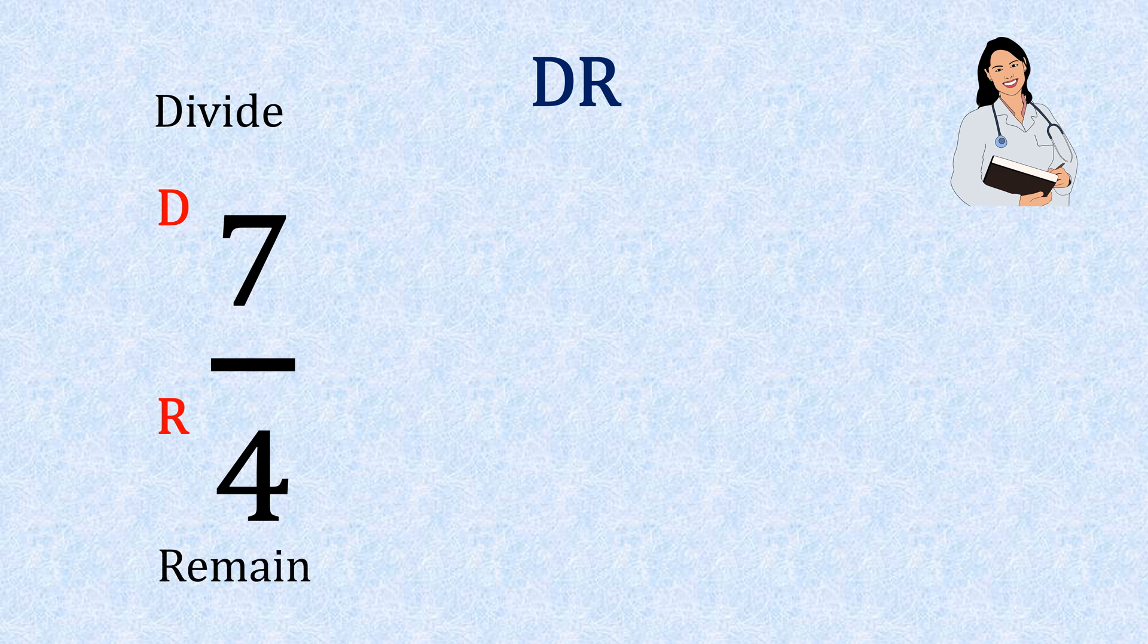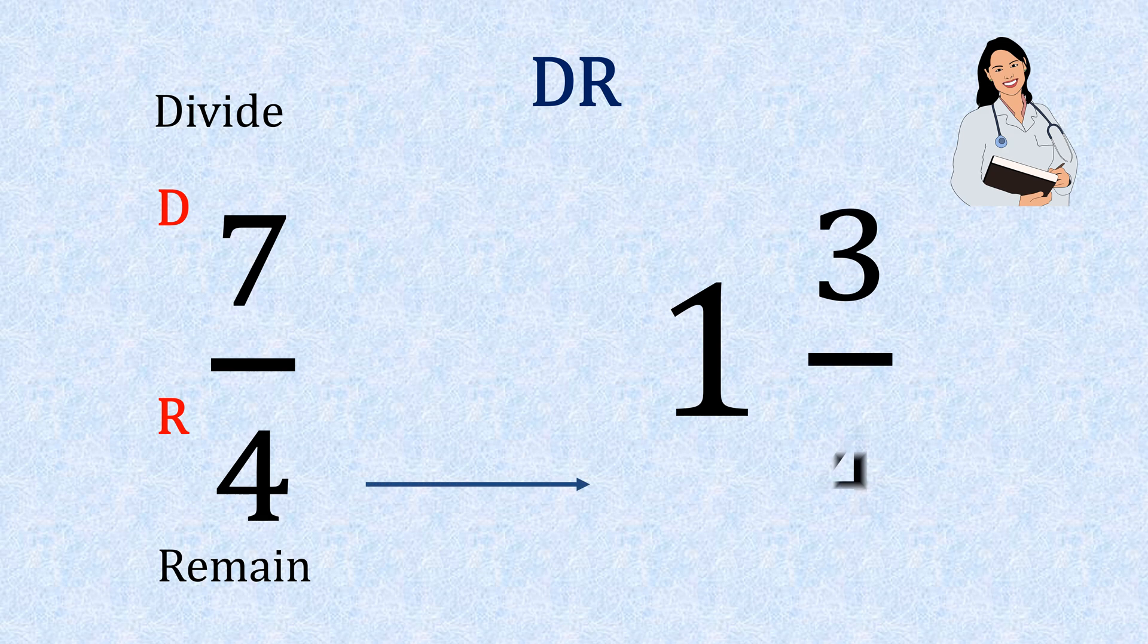So what we're going to do is divide seven by four. Four into seven go once with leftover of three. And then our four at the bottom remains the same, giving us the answer one and three quarters.